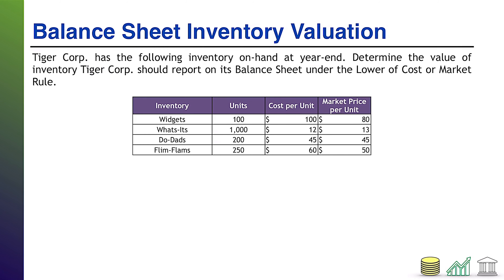Moving on: balance sheet inventory valuation. Tiger Core has the following inventory on hand at year end — determine the value of inventory Tiger Core should report on its balance sheet under the lower of cost or market rule. Pause the video and try it. Remember, the lower of cost or market rule is not complicated — it's about as straightforward as accounting can be.